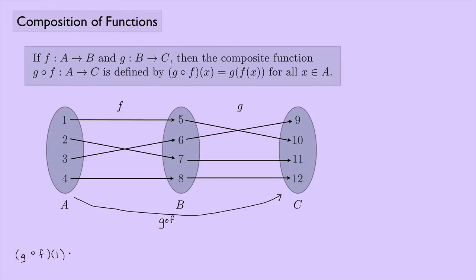So g composed with f of 1, we can rewrite this as g of f of 1 using the definition. So this is g of f of 1. And now this would be the same thing as g of, well, what is f of 1? f of 1 is 5. So this is the same thing as g of 5. And what's g of 5? Here's the function g right here, and 5 is mapped to 10. So g of 5 is 10. And that tells us that g composed with f of 1 is 10.